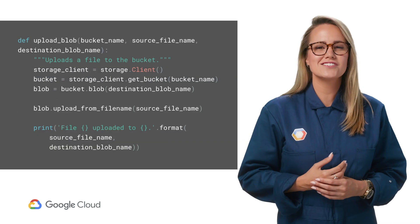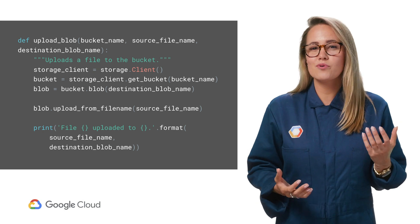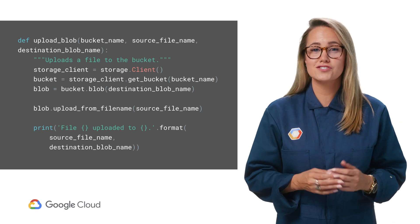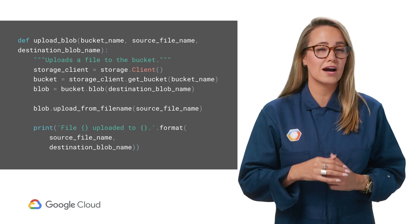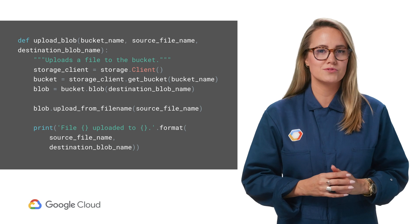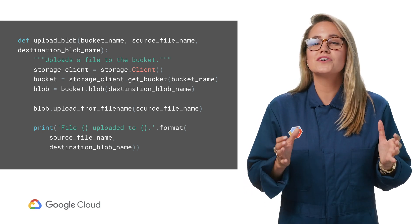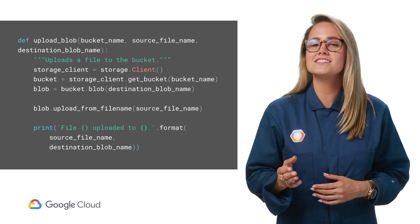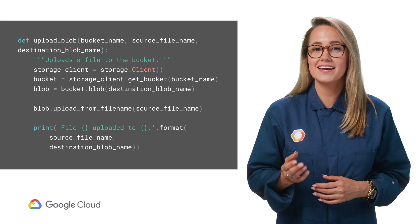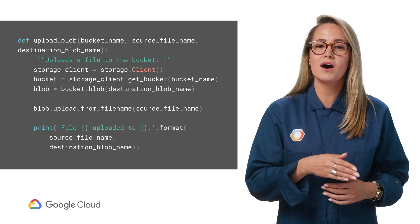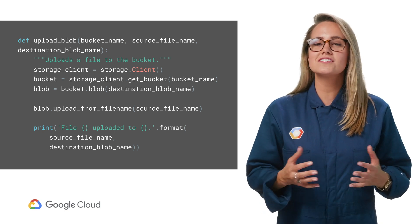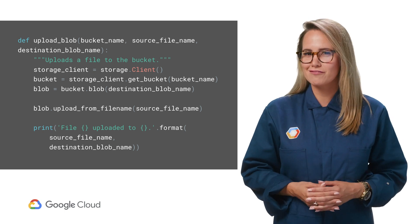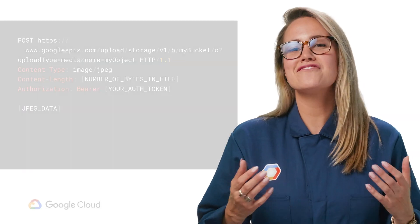Up next are our client libraries. At some point, you might need to interface with GCS directly from your code rather than going out to a command line option. You can include the client libraries into your code and call a simple API to get data into a bucket or a folder. And regardless of your language, we've probably got you covered.